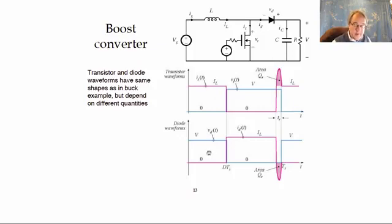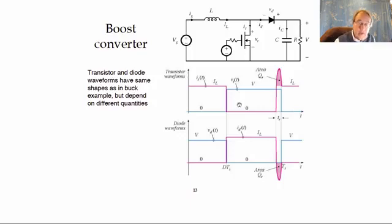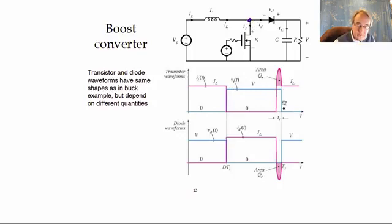Here is the boost converter and the transistor and diode waveforms. They look qualitatively the same as the waveforms we drew in the last lecture for the buck converter with reverse recovery. The only real difference is that the values are a little different — the voltages across the semiconductors when they're off is equal to the output voltage V rather than the input voltage. The voltage at the switching node, or the voltage across the MOSFET, is this blue line shown here.